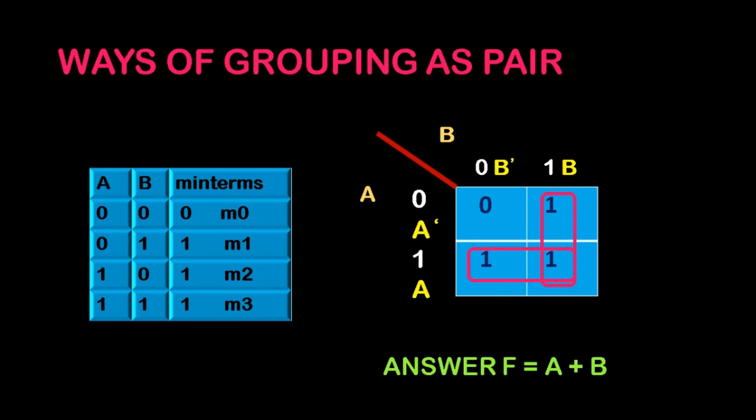And finally we are grouping the numbers. Like vertically two boxes I am combining, A dash and A. So B is common over there, so you can directly take and write in the output like B. And for the horizontal 1,0 and 1,1, A is common over there and B dash and B are differing. So you can take the constant term which is not at all changing as the answer. So A plus B will be the answer for this problem.